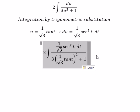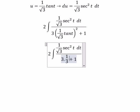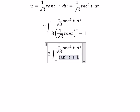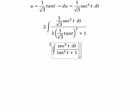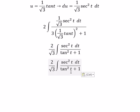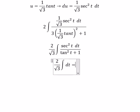So we need to simplify. This gives us 1 over 3, multiplied by tan squared t. We substitute 3 times 1 over the square root of 3 times tan t into the expression. After simplification, we arrive at 2 over the square root of 3 times t.